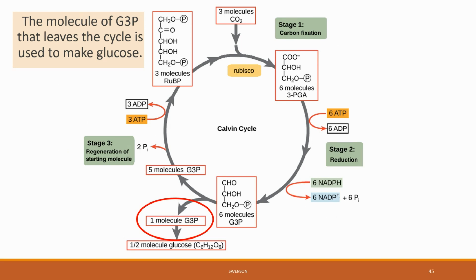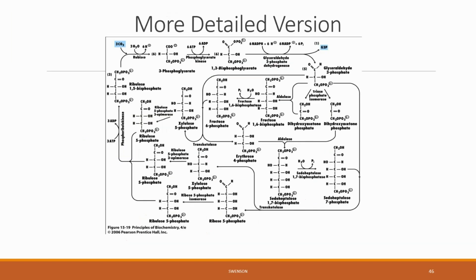The sixth molecule of G3P is not used for RuBP regeneration — this molecule is what the cell obtained by using six NADPH and nine ATP. If you count the carbons in glyceraldehyde-3-phosphate, there are three, so it will take two complete Calvin cycles to generate enough reduced carbon for one glucose molecule, which has six carbons. This slide shows a detailed version of all the reactions, but for our purposes be familiar with each stage and the three items to track for each stage.